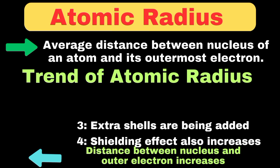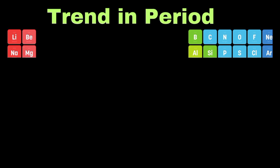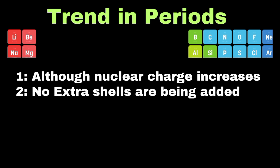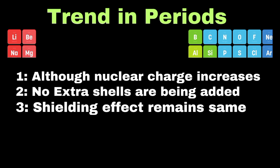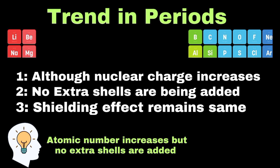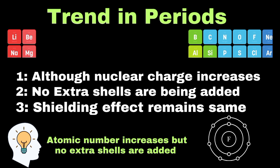If we look at the periodic trend, although the nuclear charge is also increasing here, keep in mind that no extra shells are added when moving from left to right in periods. If no extra shells are added, it means the shielding effect will also remain the same. Here the atomic number is increasing, but no electronic shells are added, which shows that incoming electrons are being pulled closer to the nucleus. This means that due to the nuclear pull, the size decreases as we keep adding electrons. Hence, the atomic radius decreases from left to right in a period.